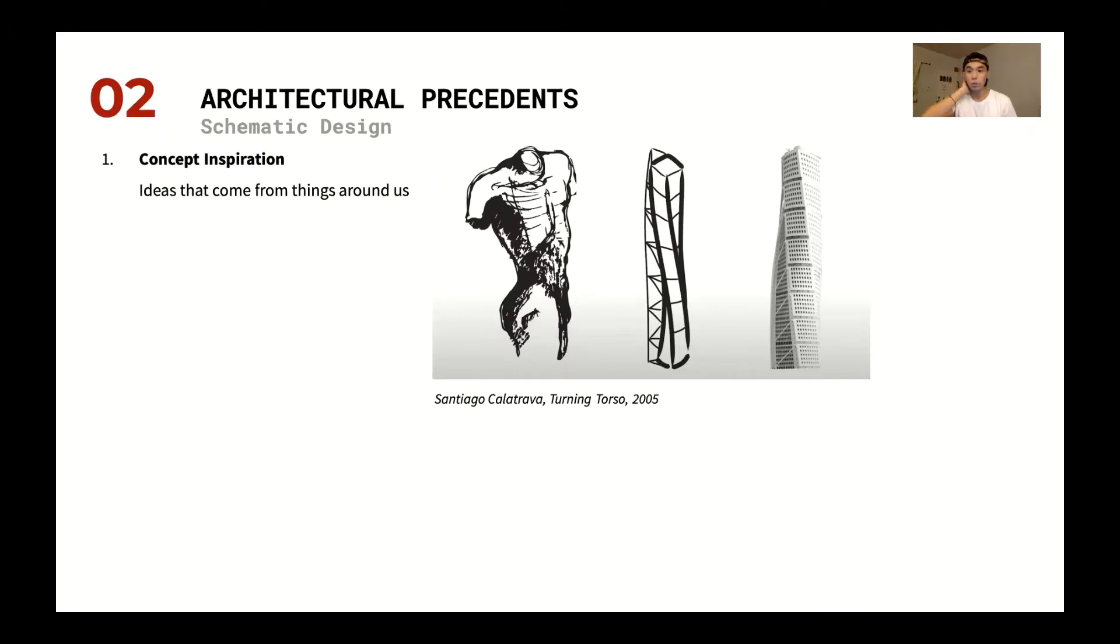The next possible way that an architect may use precedent in design is actually really referencing previous projects or similar projects, size and scale to just like, hey, we can actually do this. We've seen this before. Or we think we can do it better.